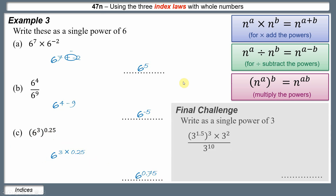Here is one final challenge: pause the video, give it a good go. First, deal with (3 to the 1.5) cubed — multiply 1.5 by 3 to get 3 to the 4.5. Then we still need to multiply by 3 squared and divide by 3 to the 10. Apply the first law to add 4.5 and 2, giving 3 to the 6.5, still divided by 3 to the 10. Subtract: 6.5 minus 10 gives 3 to the minus 3.5.